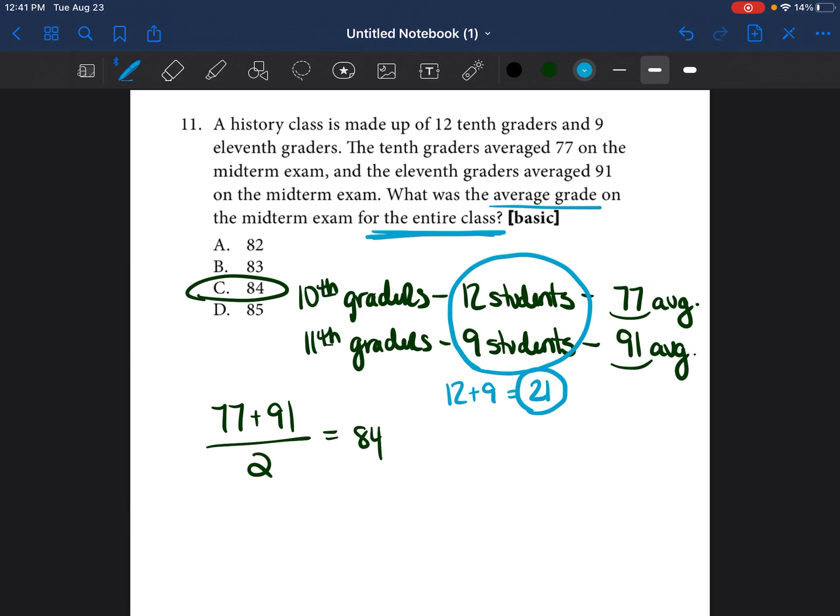So because they don't tell us what grade every single student got, we're just going to say that every student in the tenth grade got an average of 77. So we're going to do 77 plus 77 plus 77 plus 77, 12 times. That is a lot to do. So instead of doing that, we're going to do 77 times 12.